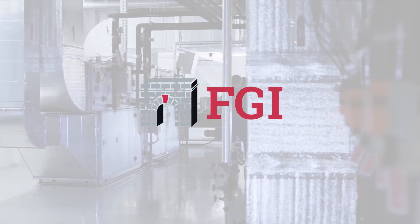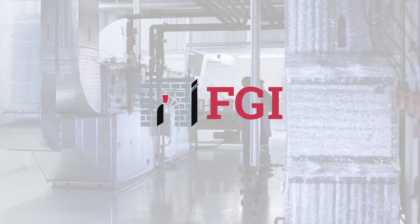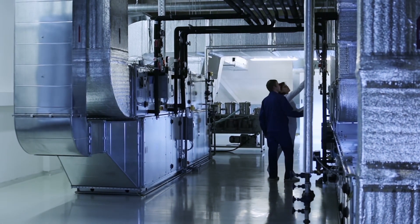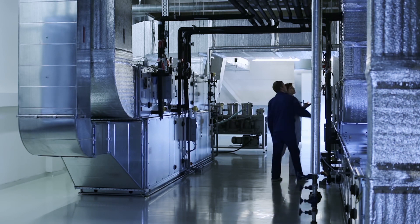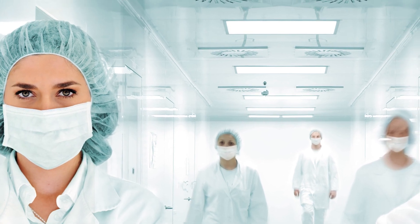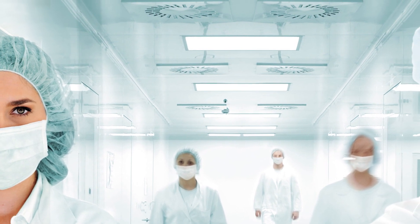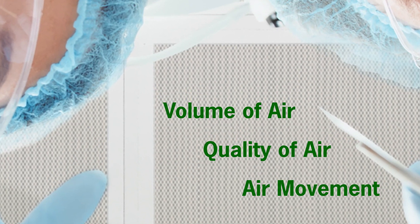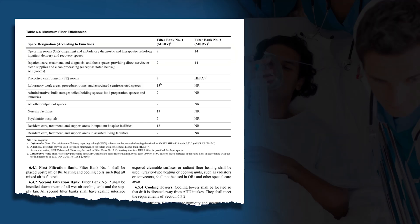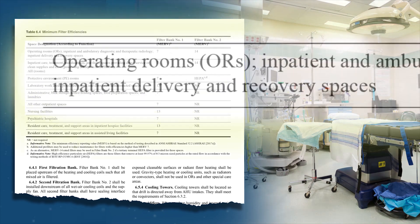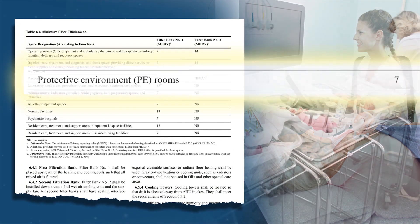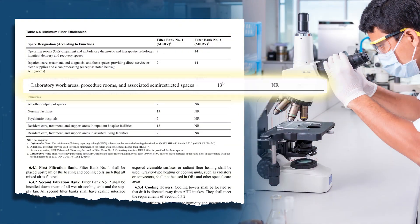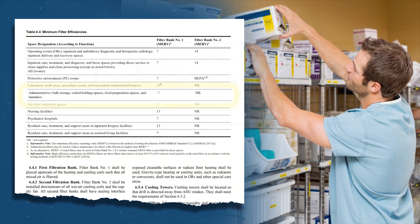By ASHRAE, then adopted by the Facilities Guidelines Institute, it is crucial for medical facilities personnel to understand the key elements of the updated standard and the factors to consider in optimizing healthcare air quality while controlling and even reducing operating expenses. When it comes to indoor air quality, ventilation is a critical component which takes into account volume of air, quality of air, and air movement. The ASHRAE Standard 170 2017 ventilation of healthcare facilities defines ventilation system minimum requirements, including minimum air filter efficiencies, which represent the expected percentage of particle capture.